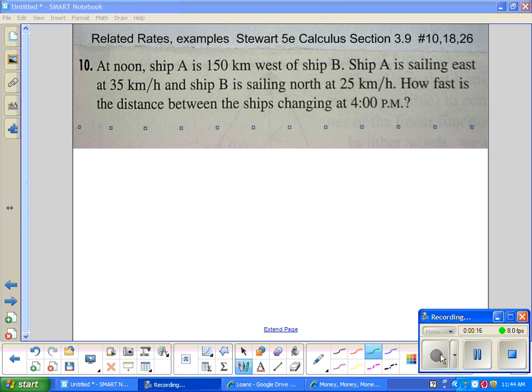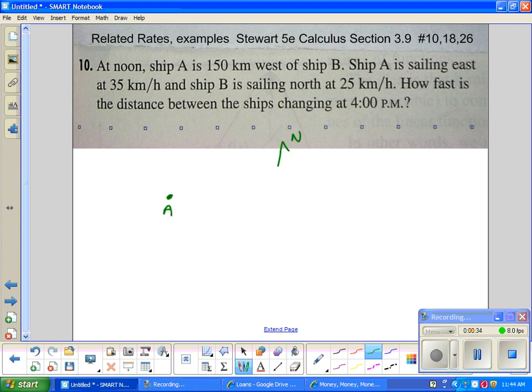Problem 10 says at noon, ship A is 150 kilometers west of ship B. Ship A is sailing east at 35 kilometers per hour. Ship B is sailing north at 25 kilometers per hour. How fast is distance between ships changing at 4 p.m.? How fast? Again, related rates.